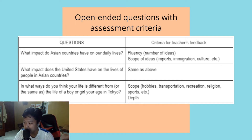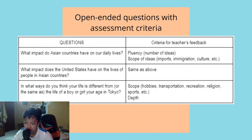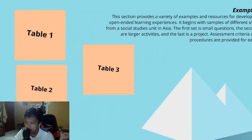The last example in Table 1: 'In what ways do you think your life is different from, or the same as, the life of a boy or girl your age in Tokyo?' The criteria for teacher's feedback includes scope, hobbies, transportation, recreation, religion, sports, etc.